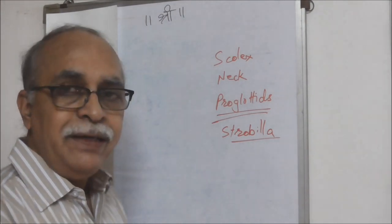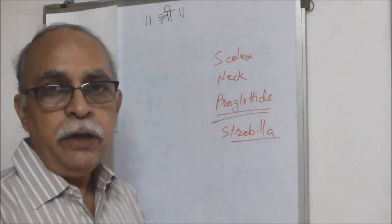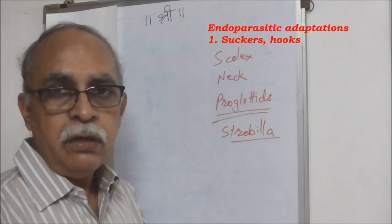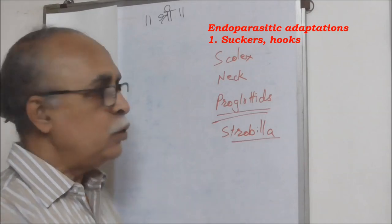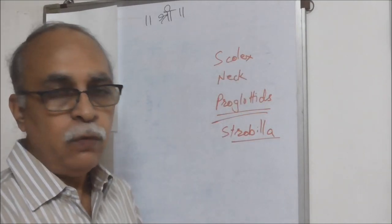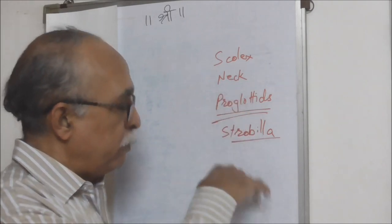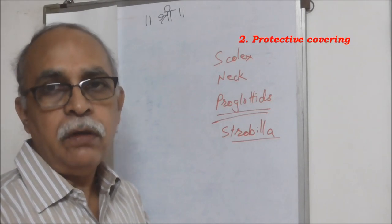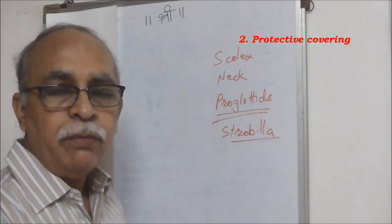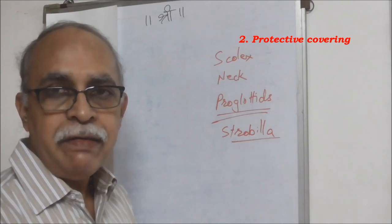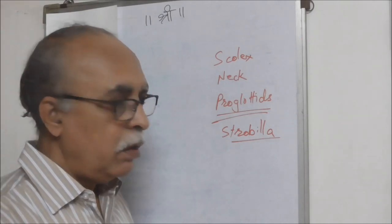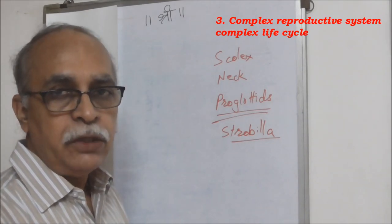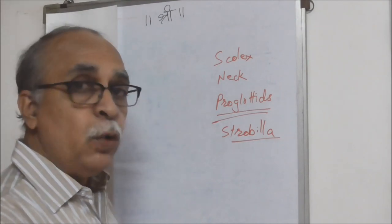Being an endoparasite, it has all suitable endoparasitic adaptations. The scolex is adapted for attaching to the intestinal wall. The rest of the body, including the scolex, is covered with a thick protective covering to protect from the enzymes functional in the intestine. It also has a complex life cycle and complex reproductive system, but the animals are hermaphroditic — bisexual.